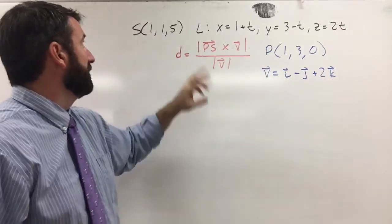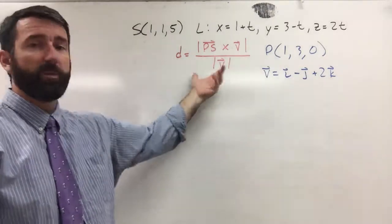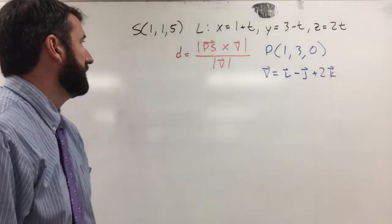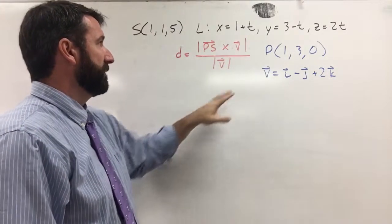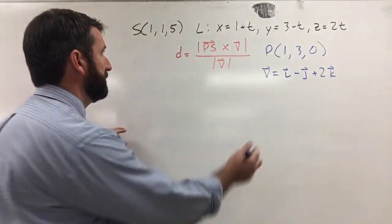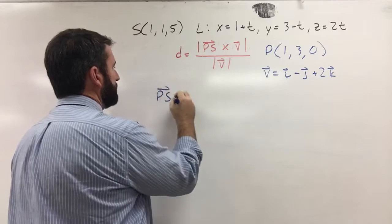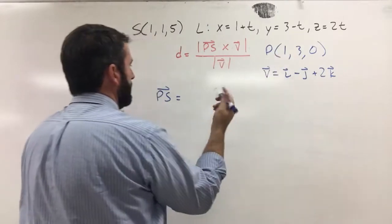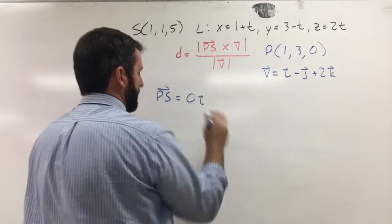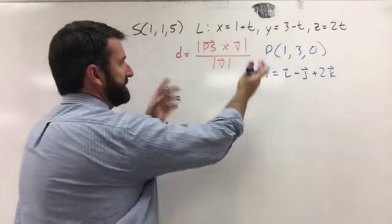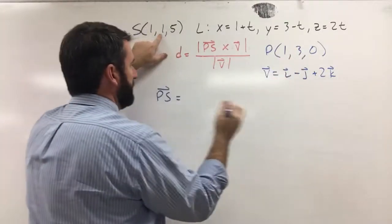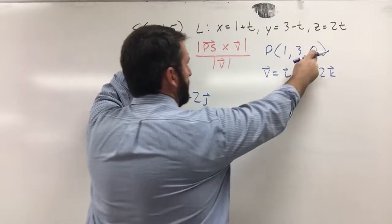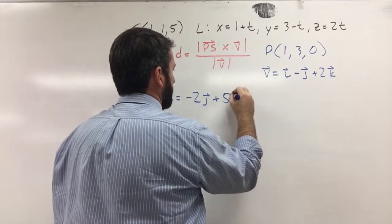Now we have P, S, and V — everything we need to find the distance. Let's find vector PS. Going from P to S: 1 minus 1 is 0i, 1 minus 3 is negative 2j, and 5 minus 0 is positive 5k. So vector PS is (0, -2, 5).